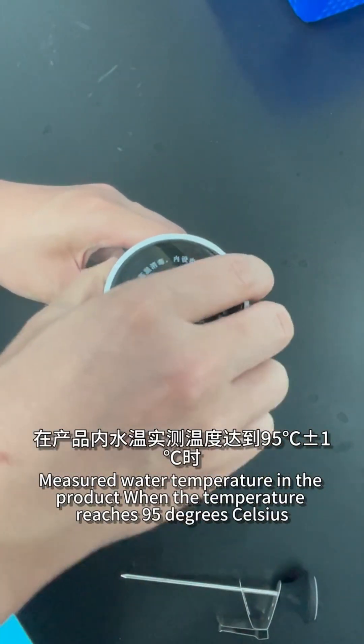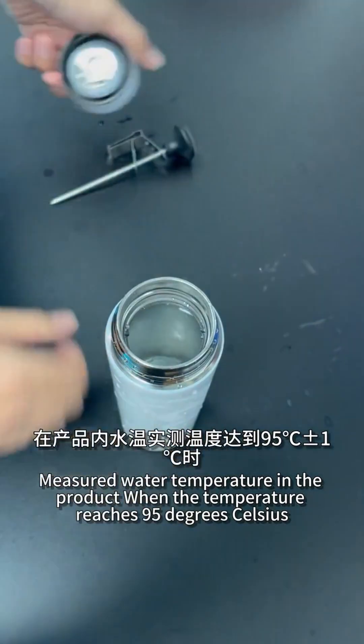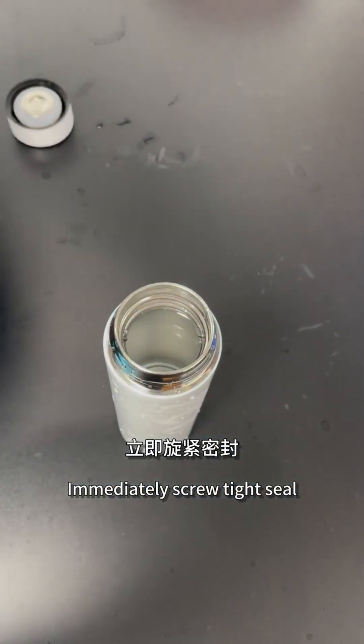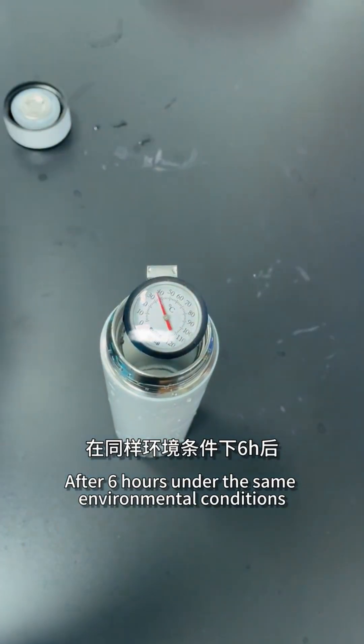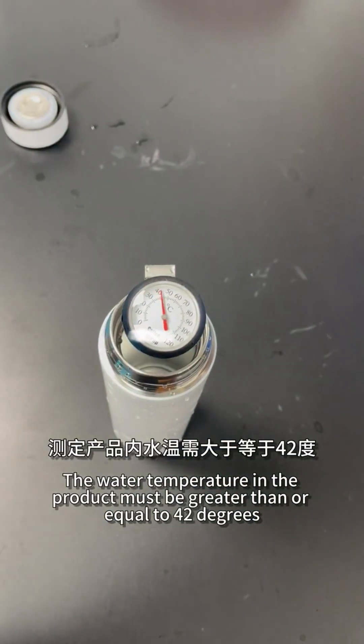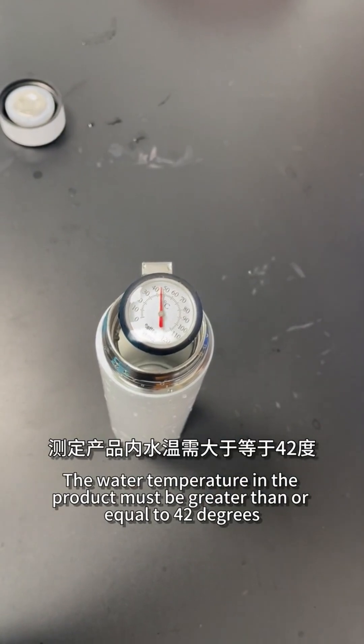Measure water temperature in the product when it reaches 95 degrees Celsius. Immediately screw tight the seal. After 6 hours under the same environmental conditions, the water temperature in the product should be greater than or equal to 42 degrees.